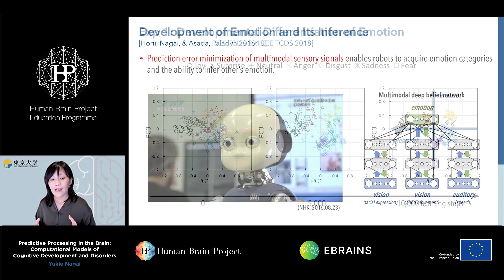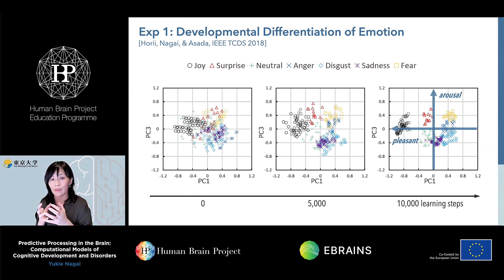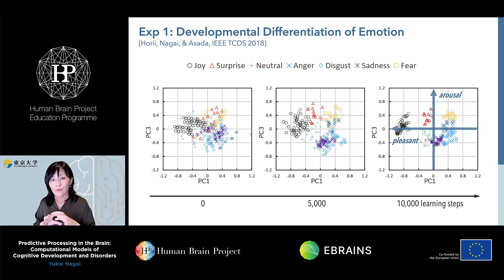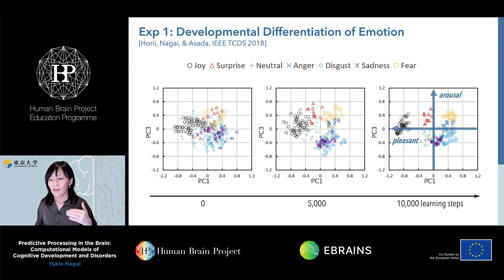Here are the results. We examined how the internal representation of the network gradually emerges as learning progresses. The network was trained with many different types of emotional expressions. Note that the emotion labels were not given to the network during training — colors were added only for visualization. You can see that representations of different emotional states gradually distribute in the latent space, and finally the network acquired a two-dimensional representation — one corresponding to valence and the other to arousal — which is also observed in human emotional recognition.